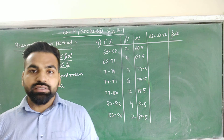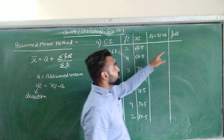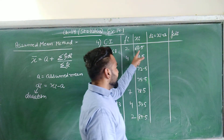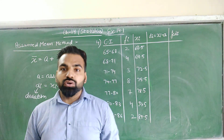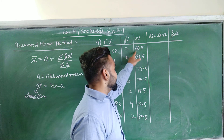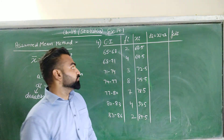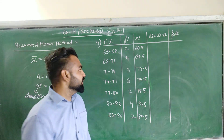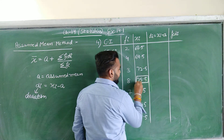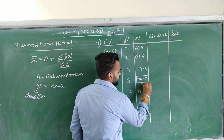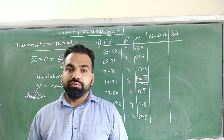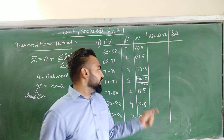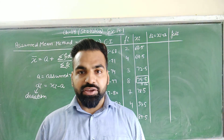Next we have to calculate dᵢ, that is the deviation. But first we need to find the value of 'a', the assumed mean. There are 7 class marks in total, from 66.5 to 84.5. Since there are an odd number of class marks, we take the middle (4th) class mark. So a = 75.5.